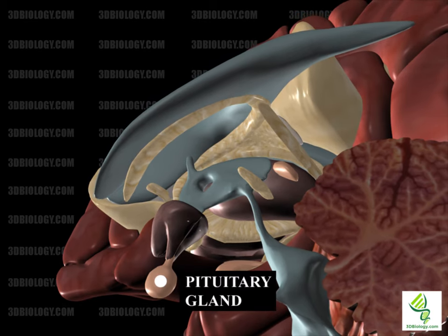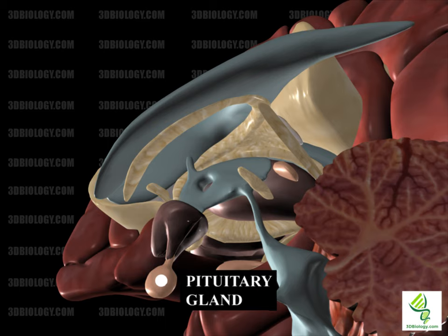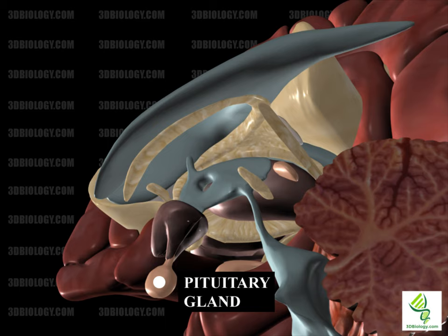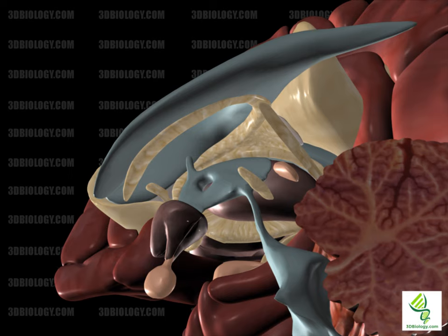The pituitary is an endocrine gland located at the bottom of the hypothalamus. Hormones secreted here control blood pressure, temperature regulation, sex organ function, thyroid function, pain relief, and water regulation. The posterior pituitary is connected to the hypothalamus by the pituitary stalk. The pituitary has an anterior, intermediate, and posterior lobe.